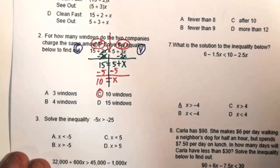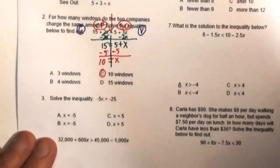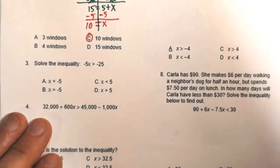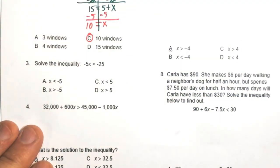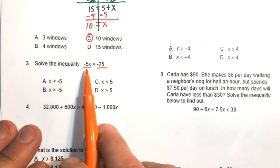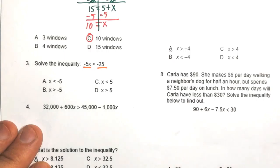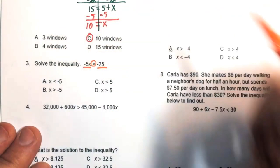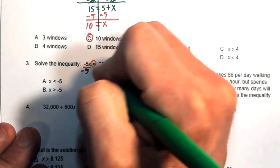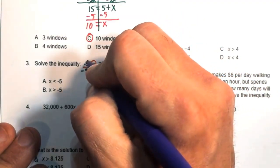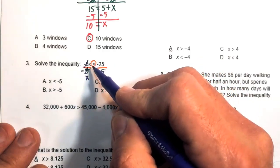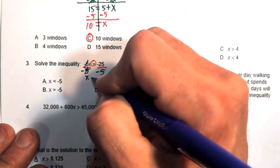Number three: solve the inequality negative 5x greater than negative 25. There should be some alarms going off when you see that negative 5 next to x, because if you multiply or divide both sides by a negative, the inequality sign must flip. We need to divide both sides by negative 5, and negative 5 divided by negative 5 gives us 1, so 1 times x gives us x.